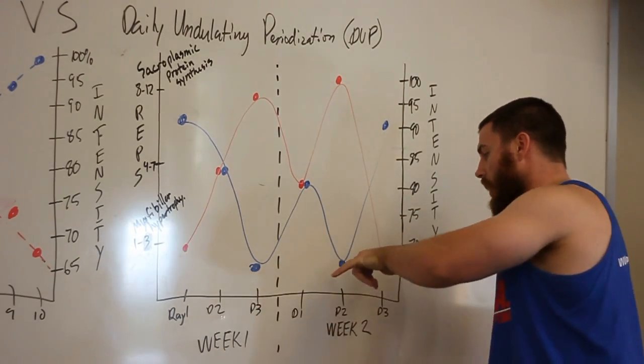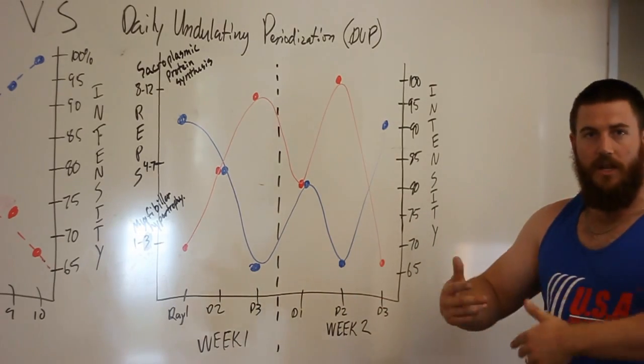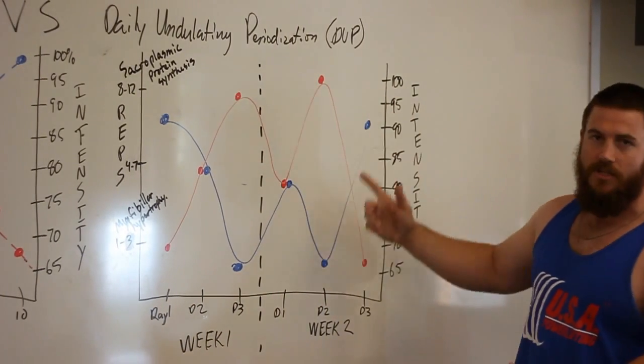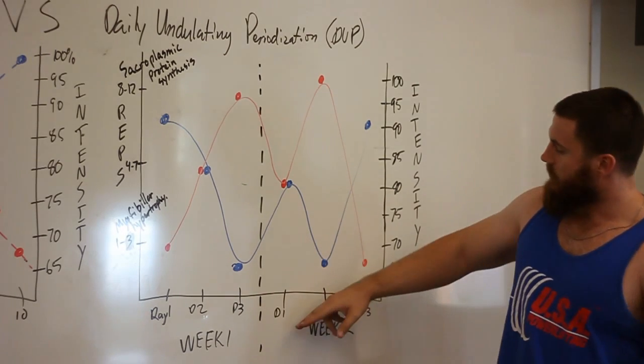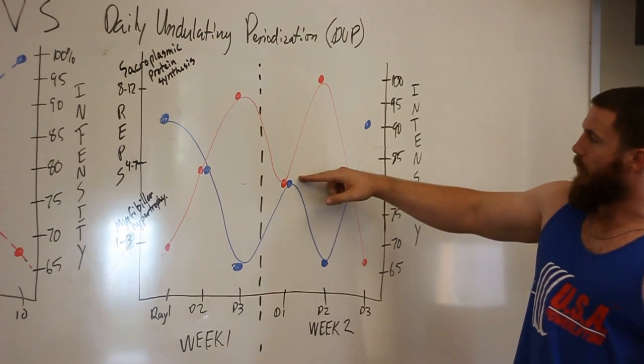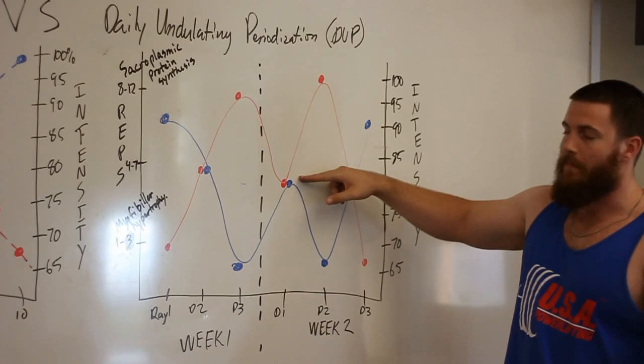On week two, you change it up. It's daily undulating periodization. It's undulating. It's going up and down. And so when you come in for squats, now you're doing squats bread and butter, five by five maybe.